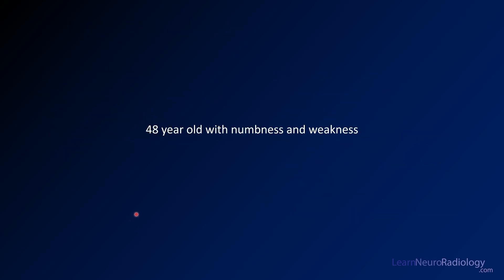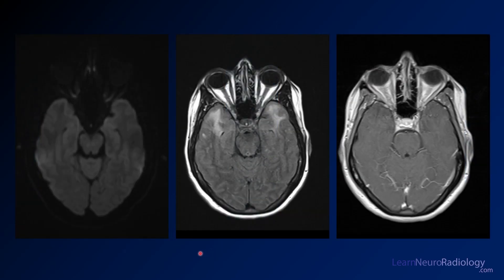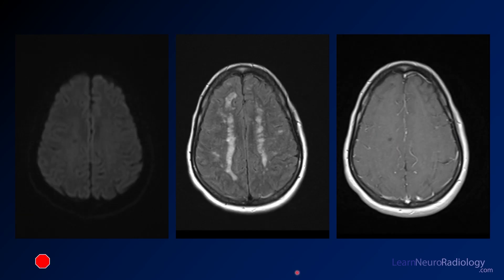For our next case, a 48-year-old presenting with numbness and weakness. On CT, there's edema in the bilateral temporal lobes and periventricular white matter that doesn't look normal. On MRI, diffusion is pretty normal but highlights abnormality in the temporal poles — edema predominantly in the white matter of those temporal poles. There's no enhancement on the post-contrast image. Coming up higher, diffusion is negative but FLAIR shows abnormal T2 hyperintensity along the border zone, again without much enhancement.